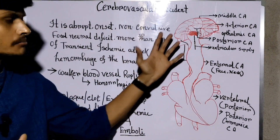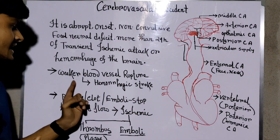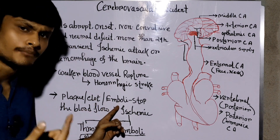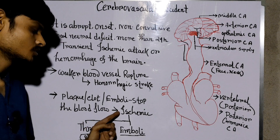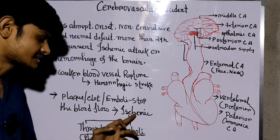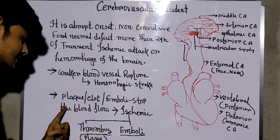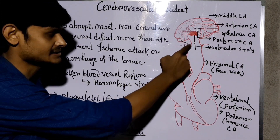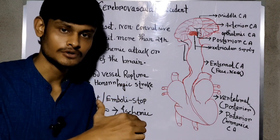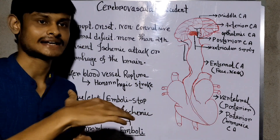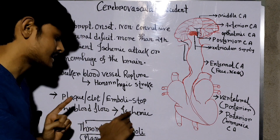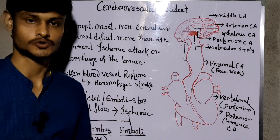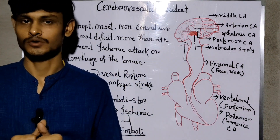Based on pathophysiology, there are two types of stroke: hemorrhagic stroke — due to rupture of weaker blood vessels — and ischemic stroke — due to plaque, clot, or emboli stopping blood flow. Ischemic stroke is further divided into two types: thrombotic, where a plaque or clot forms inside the artery and restricts blood flow without moving, and embolic, where a movable clot travels inside the brain and blocks blood flow.